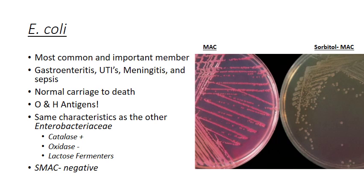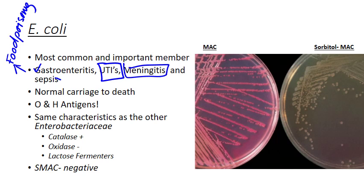So what about E. coli in particular? As I already mentioned, it's the most common and most important member. This one causes a whole bunch of nasty pathologies — everything from self-limited gastroenteritis, what you'd consider run-of-the-mill food poisoning, to really debilitating food poisoning that can lead to sepsis and death. It's also the most common cause of urinary tract infections, and in some people can even lead to meningitis. So this is a pretty important bug.